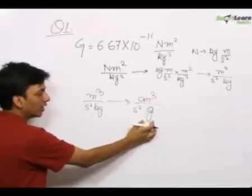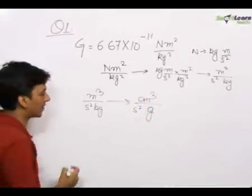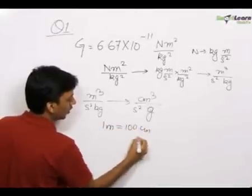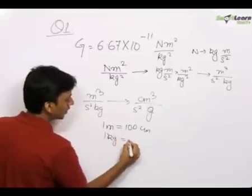Seconds we already have and grams is the unit in CGS system for mass. When we convert this, we know that 1 meter equals 100 centimeters and 1 kg equals 1000 grams.